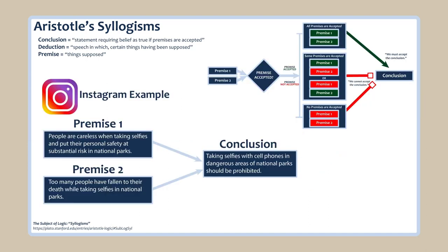Let's apply the Instagram example from the ethical perspectives lecture to the syllogism. My conclusion is: 'Taking selfies with cell phones in dangerous areas of national parks should be prohibited.' Premise one: 'People are careless when taking selfies and put their personal safety at substantial risk in national parks.' Premise two: 'Too many people have fallen to their death while taking selfies in national parks.' If you accept these two premises as true and valid, you must accept the conclusion. However, you might contest my premises are too vague or lack sufficient evidence — which is one drawback to using the simplest and strictest form of the syllogism.